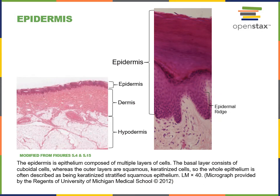Here we can see on the left a light microscope image of the integument, with the epidermis and dermis forming the superficial cutaneous membrane, and the hypodermis just deep to the cutaneous membrane, composed of mostly adipose tissue with some areolar connective tissue. The hypodermis provides cushioning and insulation as well as a route for blood vessels to travel through.